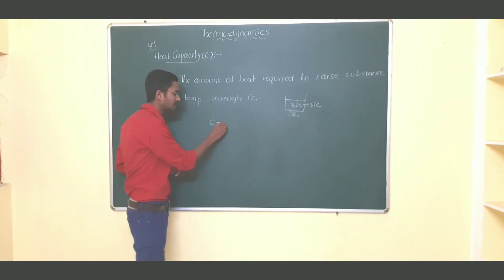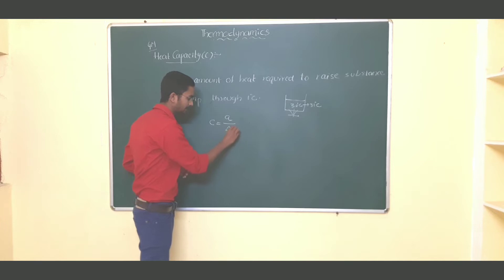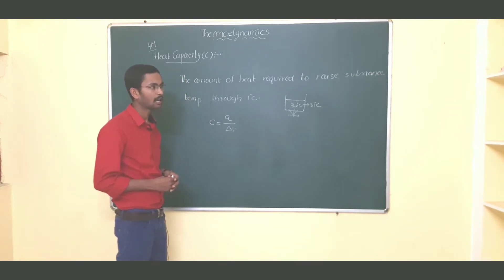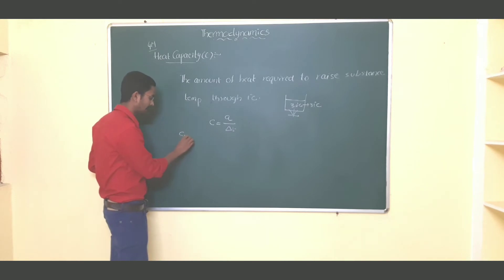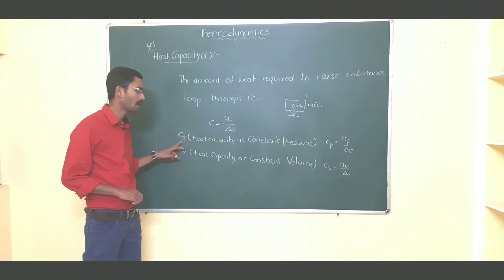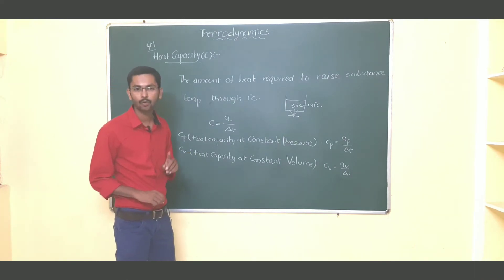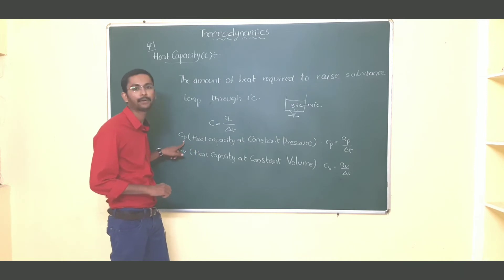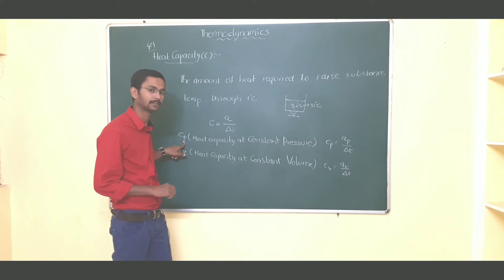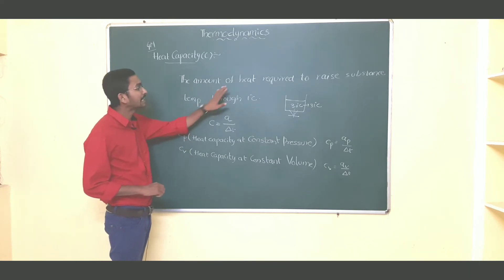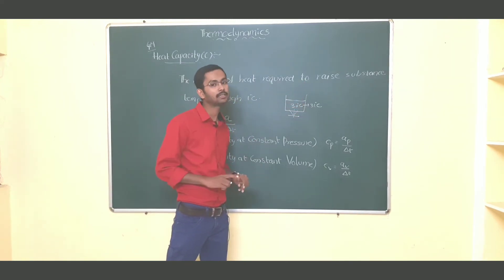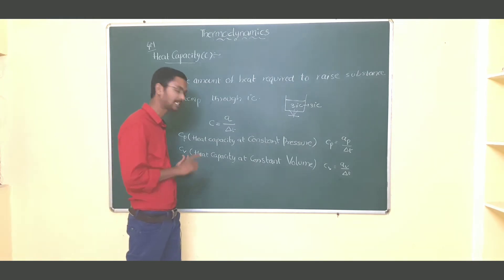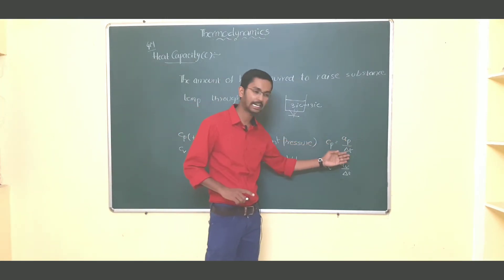Heat capacity can be represented as C = q / ΔT, where q means heat and ΔT means change in temperature. It is mainly of two types: Cp and Cv. Cp is the amount of heat required to raise 1 gram of a substance's temperature through one degree Celsius at constant pressure. Cv is the amount of heat required to raise 1 gram of a substance's temperature through one degree Celsius at constant volume.